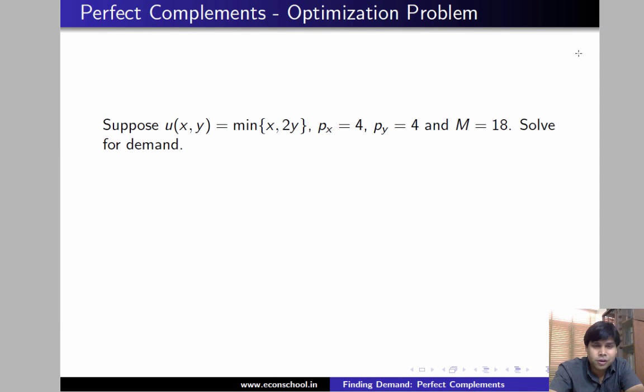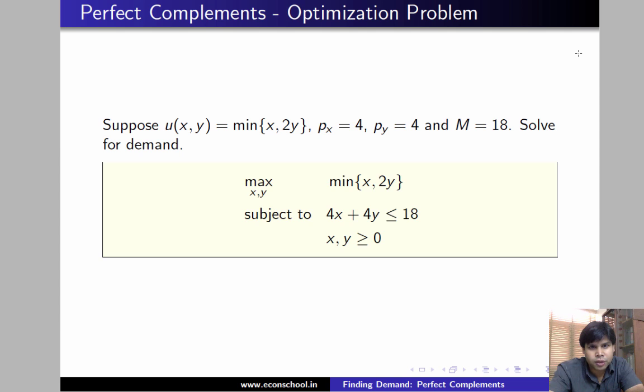Hi, in this video we'll learn how to solve for demand when the individual treats x and y as perfect complements. Consider the following utility function, which is minimum of x comma 2y. Price of x is 4, price of y is 4, and income is 18. We want to find the optimal consumption bundle.